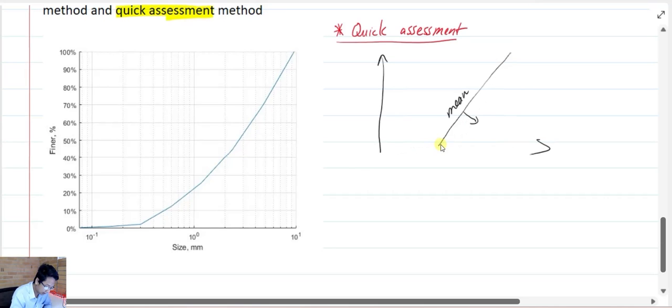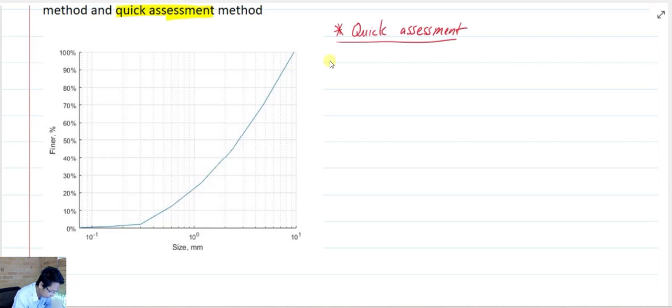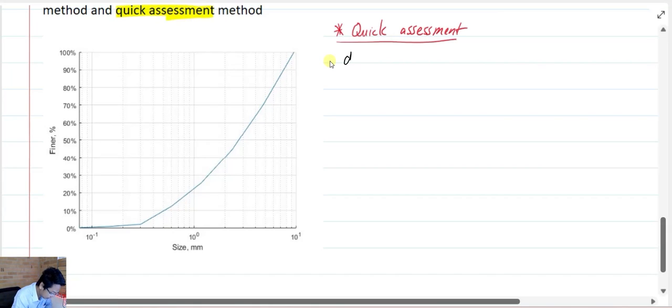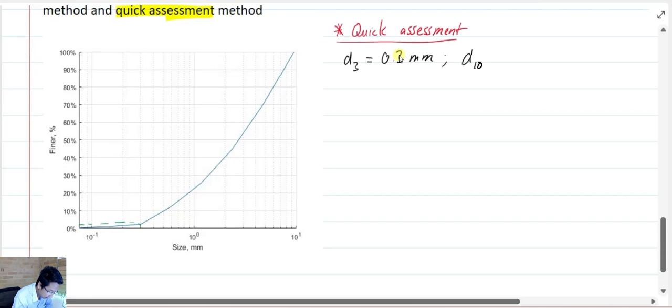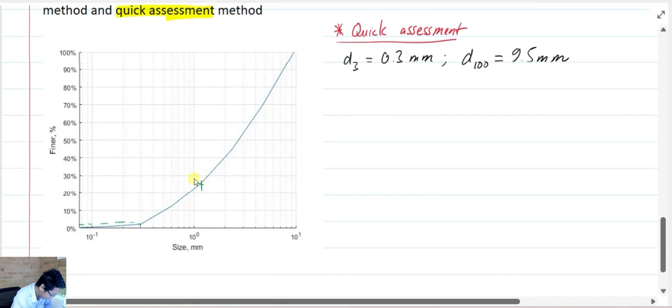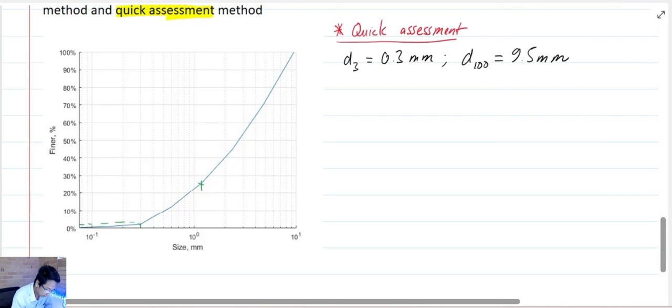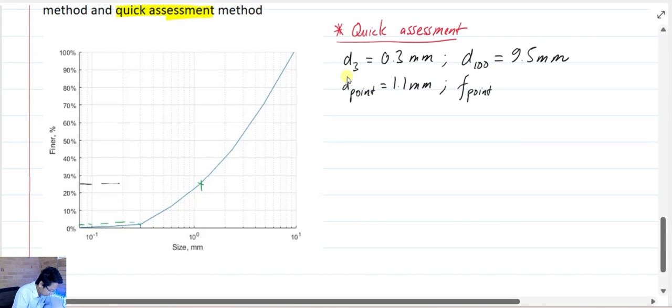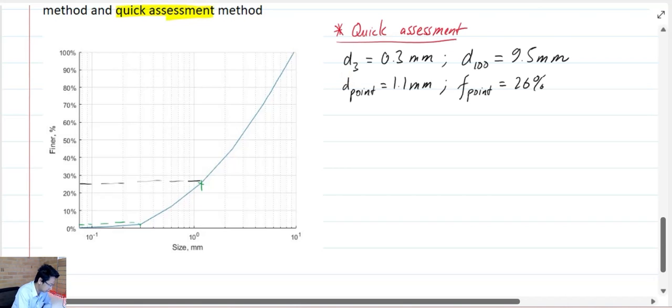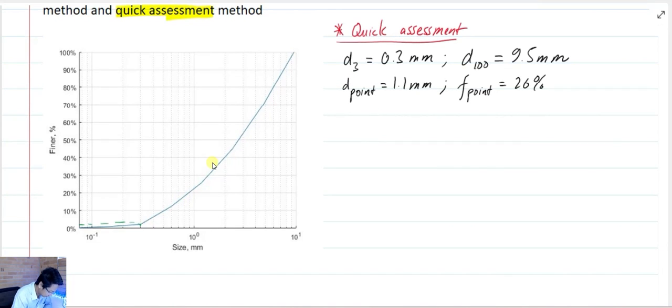To do that, we need to estimate a few key sizes. The first one is the key size for the mean slope, which is D3. In here, I have my D3 is approximately about 0.3 millimeters. My D100 is equal to 9.5 millimeters. And here, I assume that this is my furthest point. So I have my D point is 1.1 millimeters, and the fraction of that point is roughly about 26%.